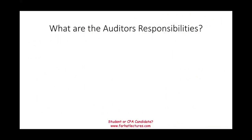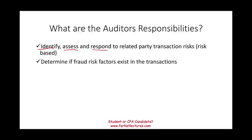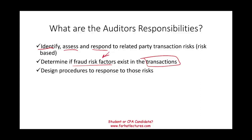What are the auditor's responsibilities when it comes to related party transactions? We have to identify any related party transaction, assess the risk involved, and respond to that risk — basically what we do with everything: identify risk, assess it, and design procedures to overcome it. We also determine if fraud risk factors exist in these transactions. Related party transactions occur regularly because many companies are interrelated; the key is to see if there are any fraud risk factors involved, then design procedures to respond.